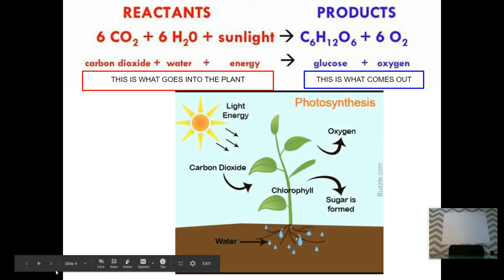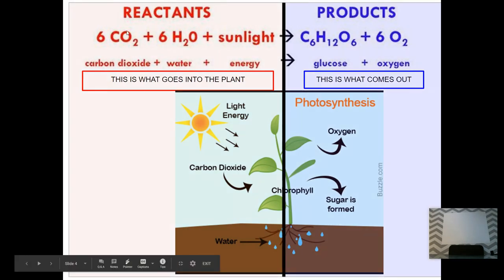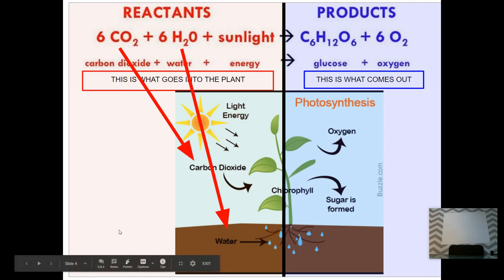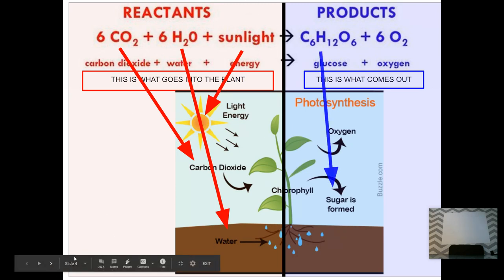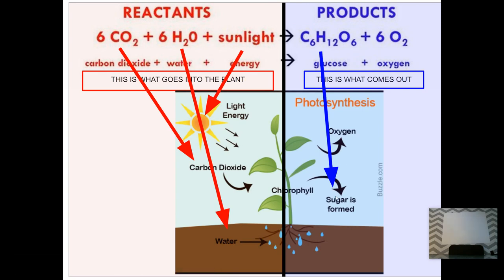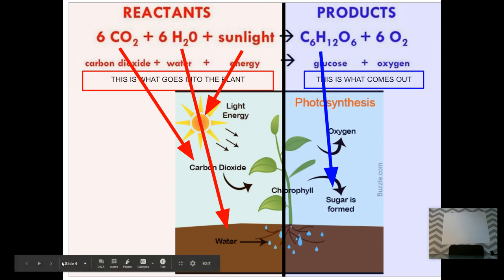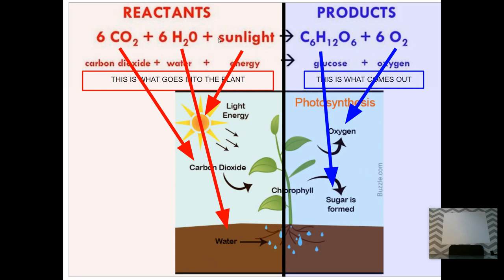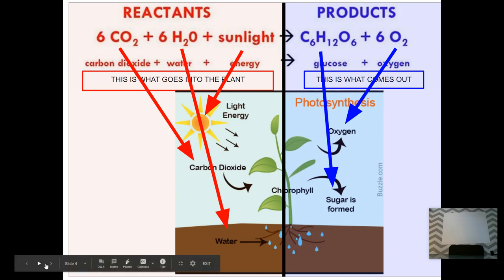Let's compare this to our diagram. We have carbon dioxide, CO2. We have H2O, our water. We have sunlight energy — that's everything going in to the plant. We have glucose or sugar — we can interchange those terms — and we also have oxygen. This is what's being produced, the products, what's coming out of the plant. So what goes in, what comes out — this is what we're going to try to model. We are going to try to model the photosynthesis chemical reaction.